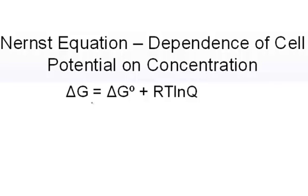Let's take a look at the dependence of a cell potential on the concentration of the components of the cell. To do this, to calculate the cell potential under non-standard conditions, we're going to have to derive a new equation. It's called the Nernst equation.